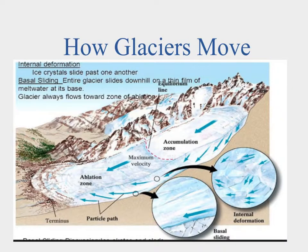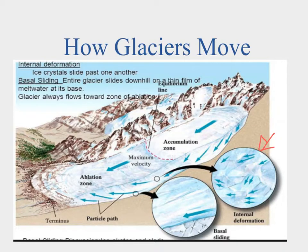There are two processes for glaciers to move. We can have internal deformation, where ice crystals are actually moving past each other. You apply enough pressure and stress and it's going to cause them to move. It tends to be kind of brittle, and this is where you get your crevasses and things of that nature — where this ice is splitting and moving.